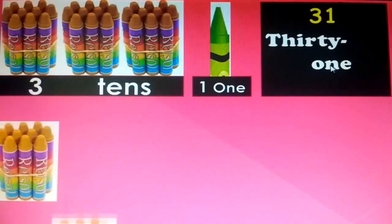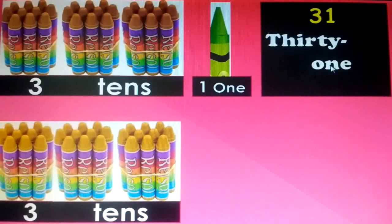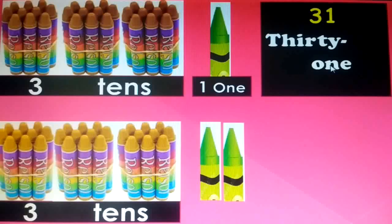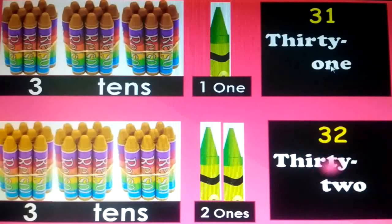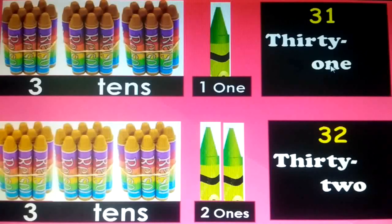1 ten, 2 tens, 3 tens, and 2 ones — so completely it has become 32, in which we are having 3 tens and 2 ones. T-H-I-R-T-Y, 30, dash, T-W-O, 2. Thirty-two.